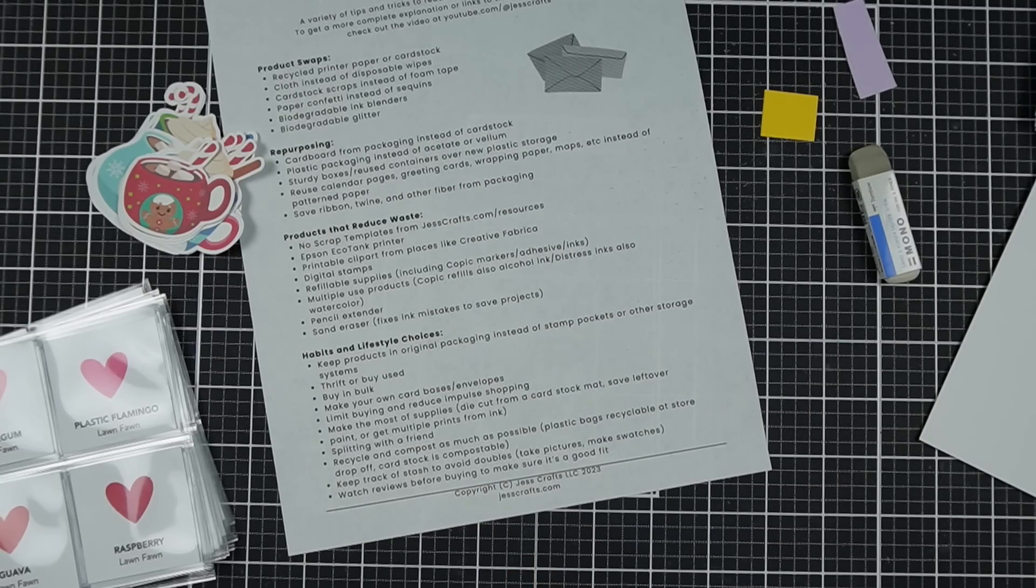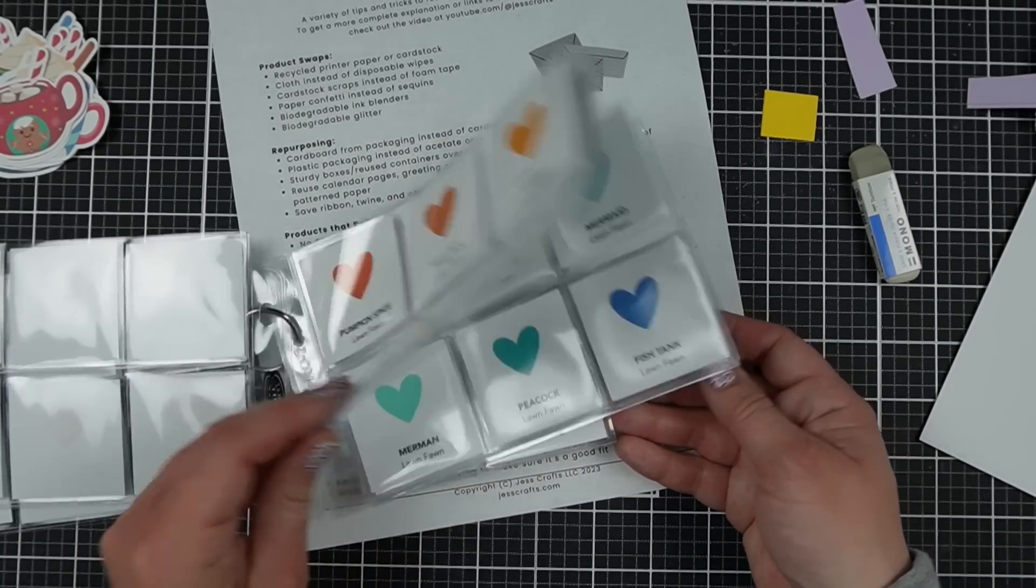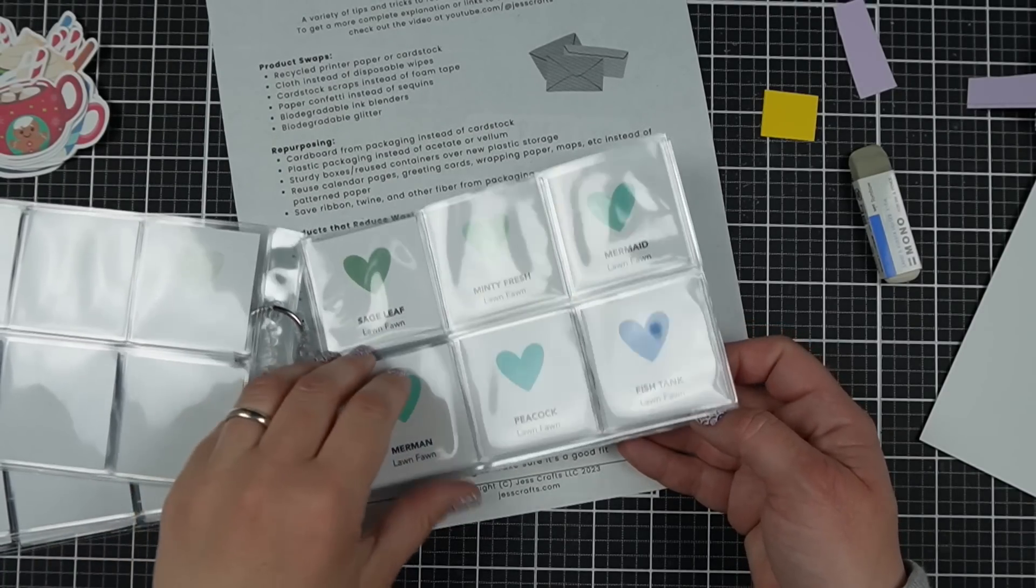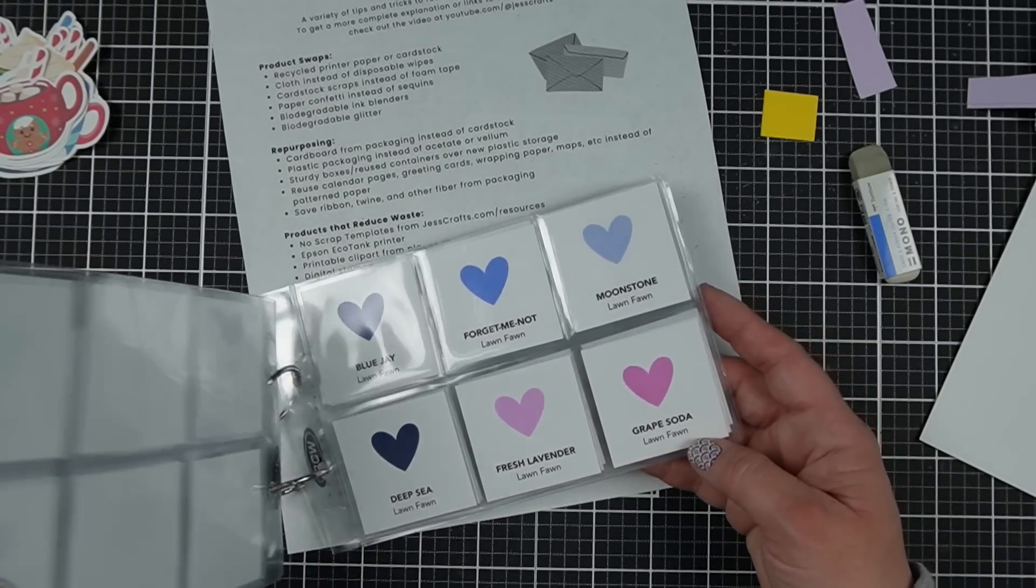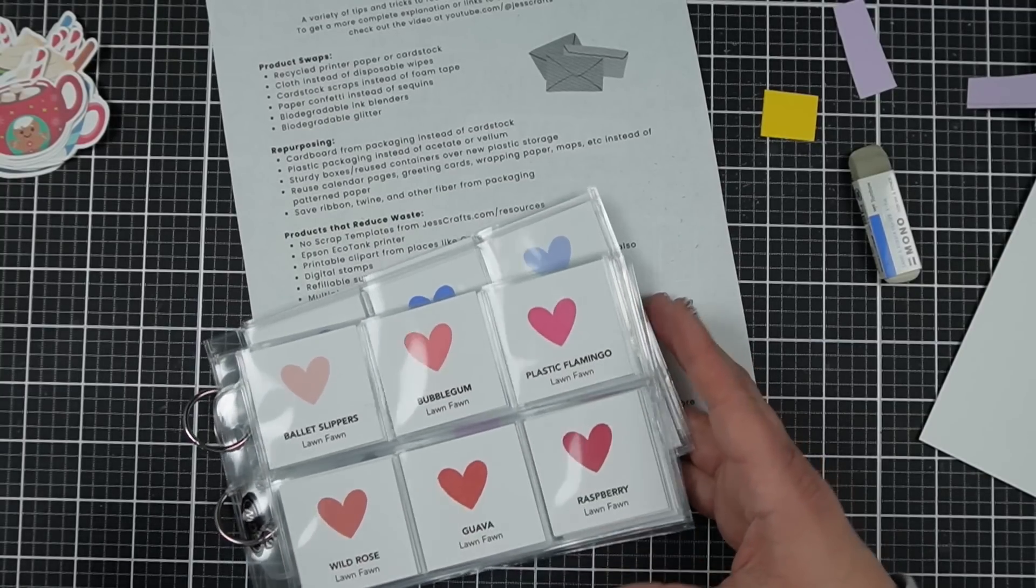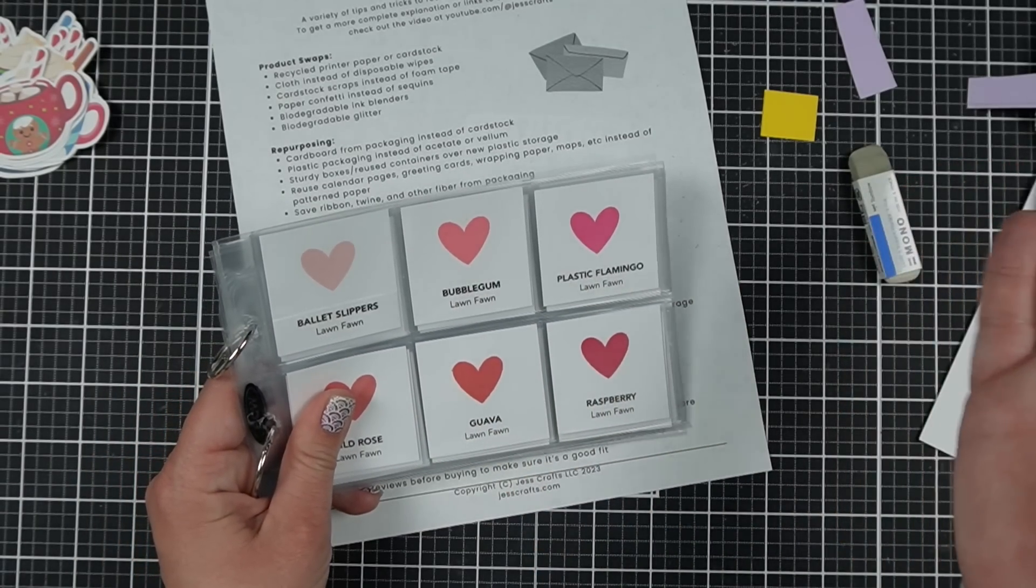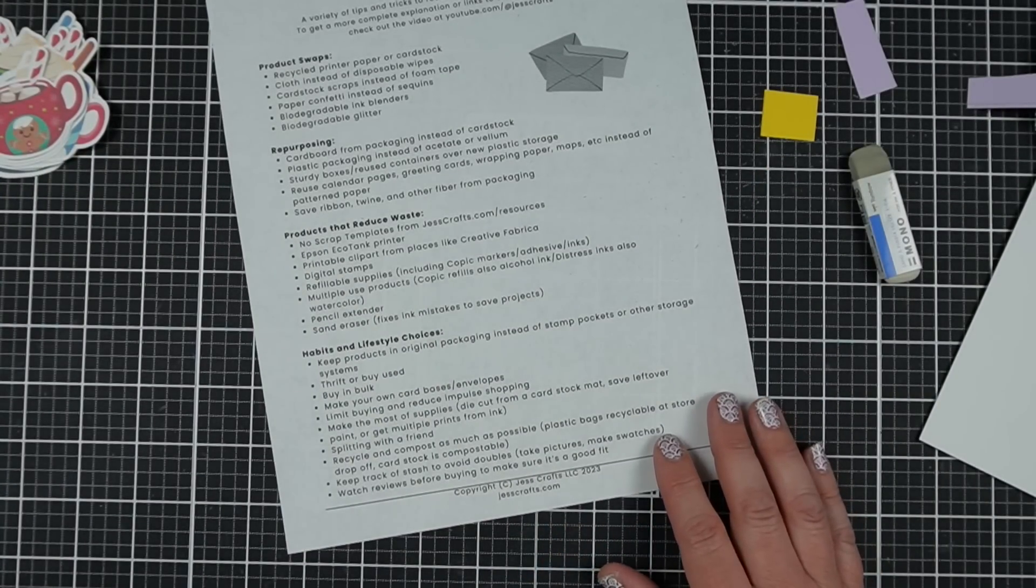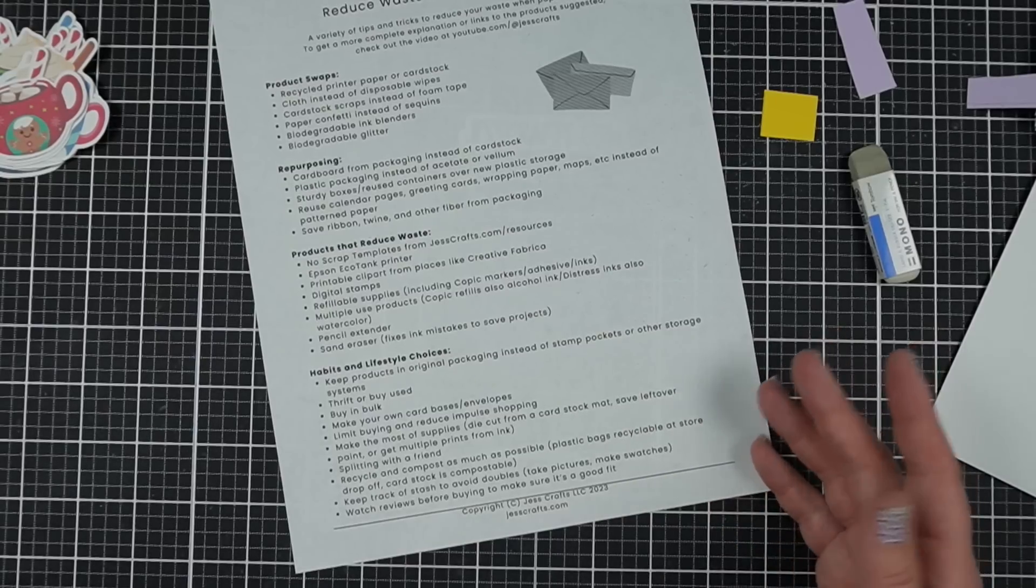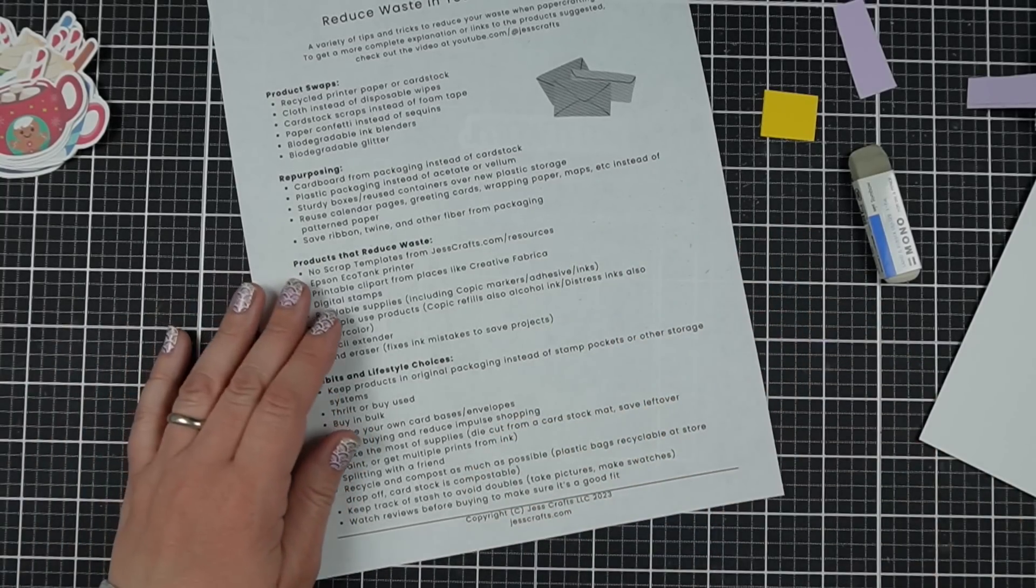Keep track of your stash to avoid doubles. Happens to the best of us. We forget we have something, we buy it again. I've talked about this before, but keeping a swatch book of all the colors you have, even just like reducing overall. Like I like this because it's super helpful when I'm going to do a project, but I just know that I own all the Lawn Fawn inks. And when a new pack comes out, I buy it, but I don't buy any other brand of ink. I just buy, I've committed to this one so that I don't have to worry about that waste of double buying. And taking pictures too. This is something like, I have swatches and stuff, but a lot of times I'll forget them. But if I just take a picture of the things that I own, or take a picture of my swatch sheets, that can be pretty helpful before I head to the store.